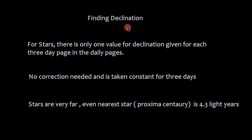Let's talk about declination. For stars, there is only one value for declination given for each three-day page in daily pages. No correction is needed and is taken as constant for three days. Why? Because the stars are very far. Even nearest star, Proxima Centauri, is 4.3 light years. Light year is the distance traveled by light in a year. So you can imagine how far the stars are from the Earth. Apparent motion of stars across the sky is very, very slow.